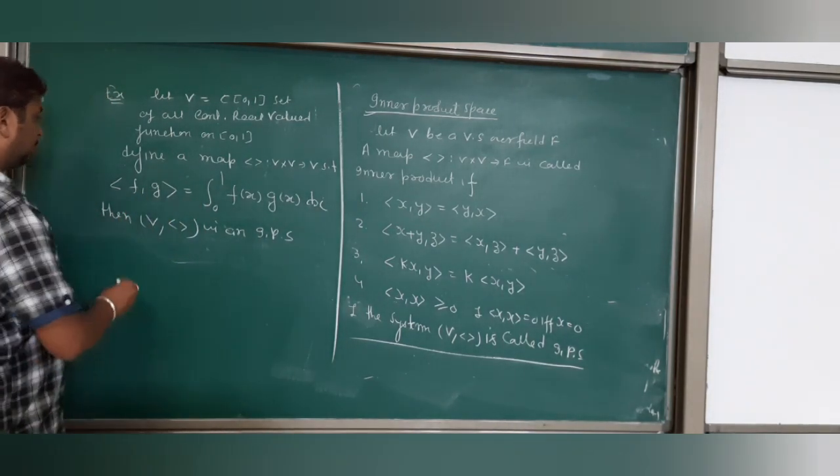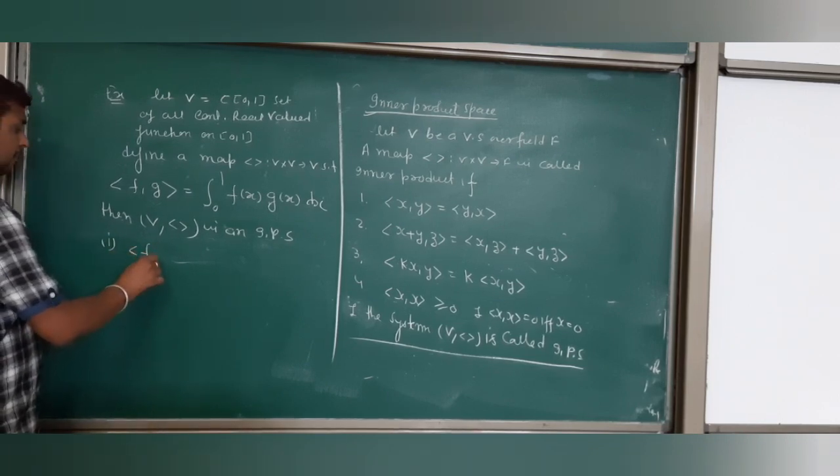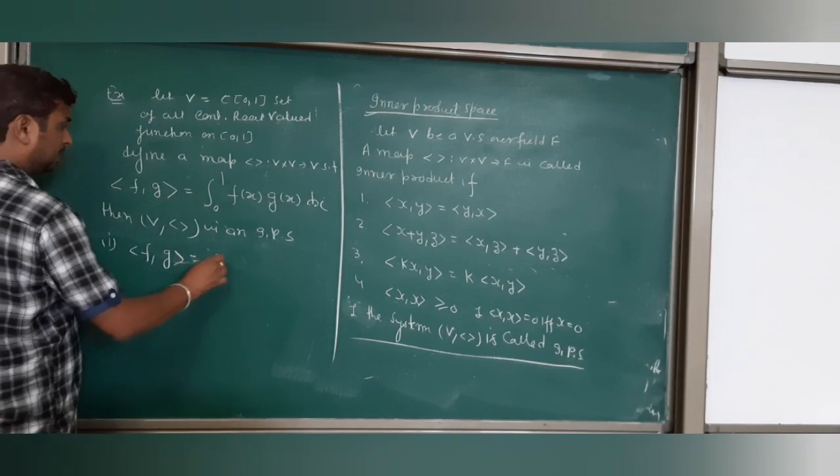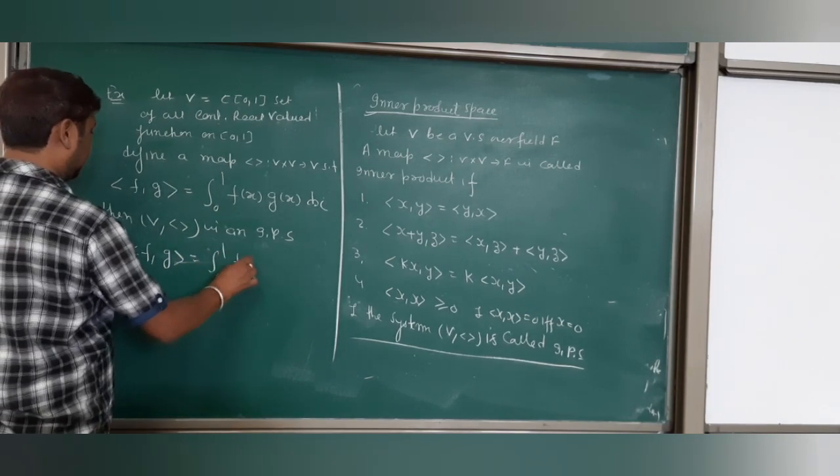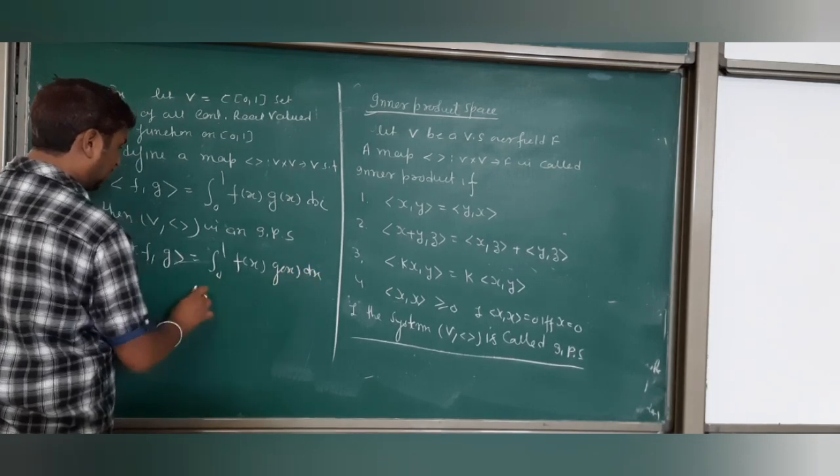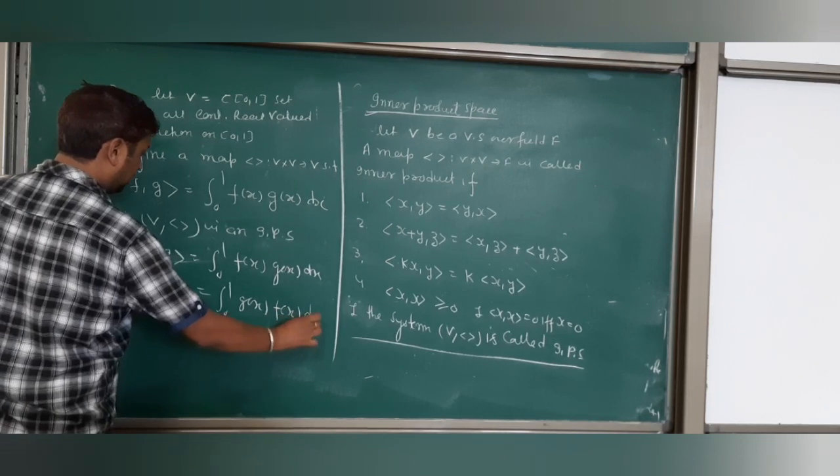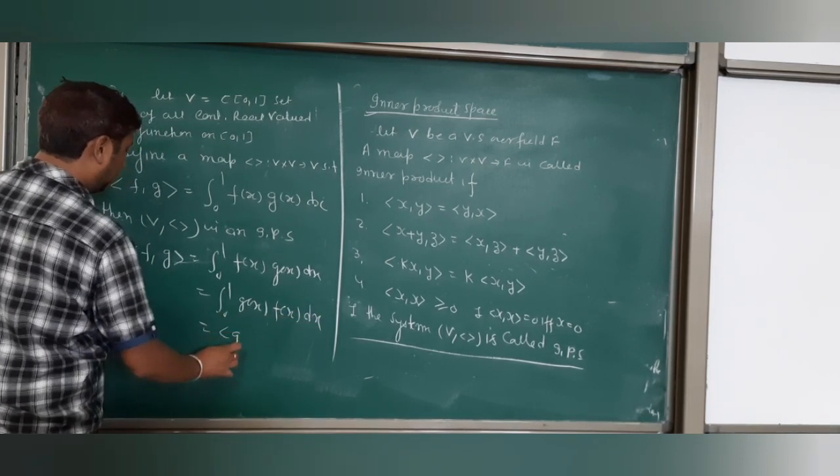What is the first property? Inner product of f, g is integral 0 to 1 of f(x)g(x)dx, which you can write as 0 to 1 g(x)f(x)dx, which equals inner product g, f.